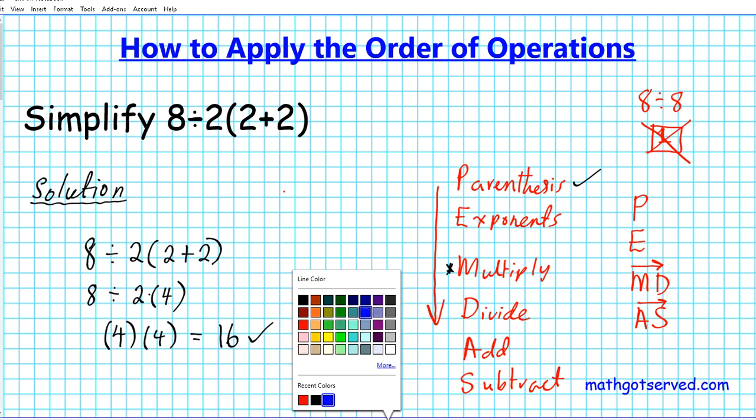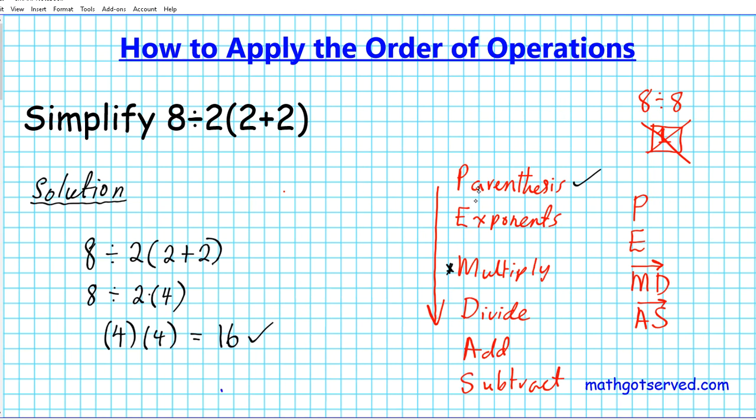So the bottom line is when you're writing down please excuse my dear Aunt Sally, your order of operations, do not write it like this. Don't write it like PEMDAS. That's incorrect. You have to remember to group multiplication and division and addition and subtraction and indicate that you carry out these two at the same time from left to right.